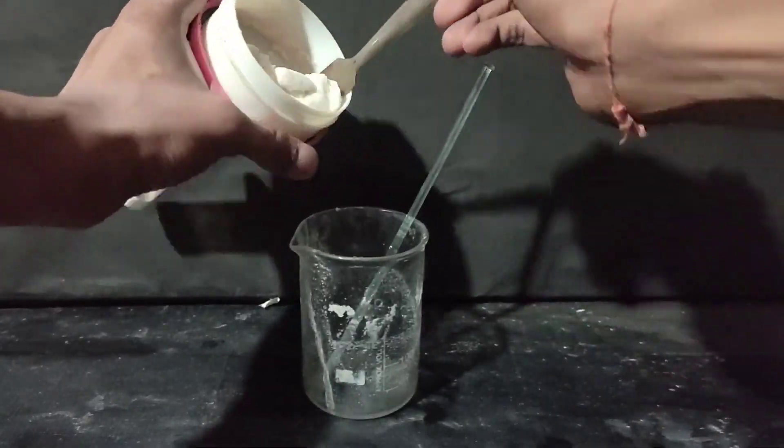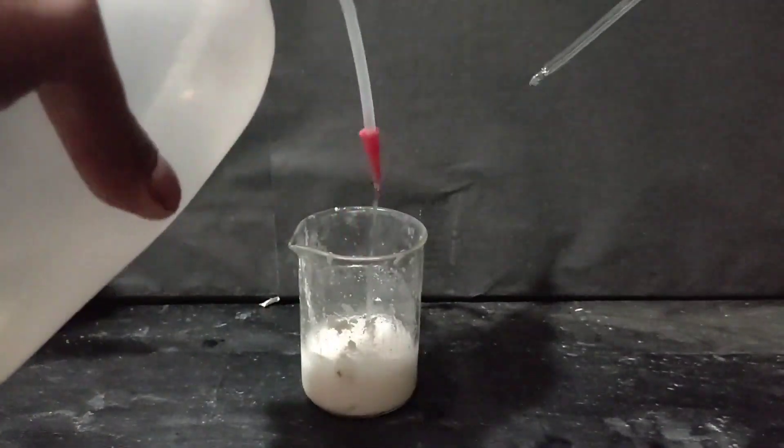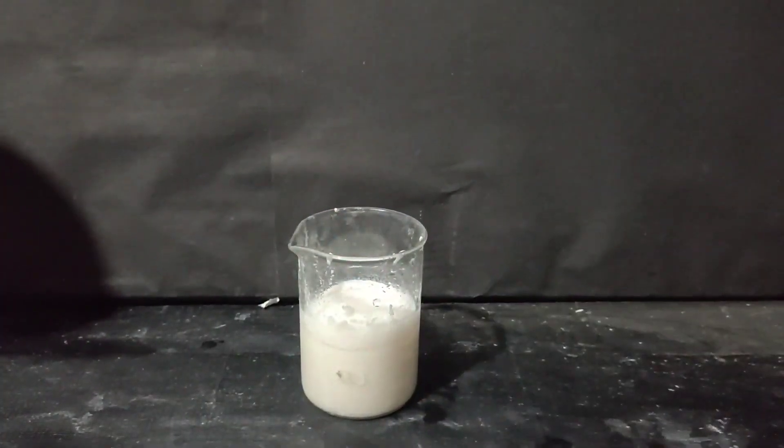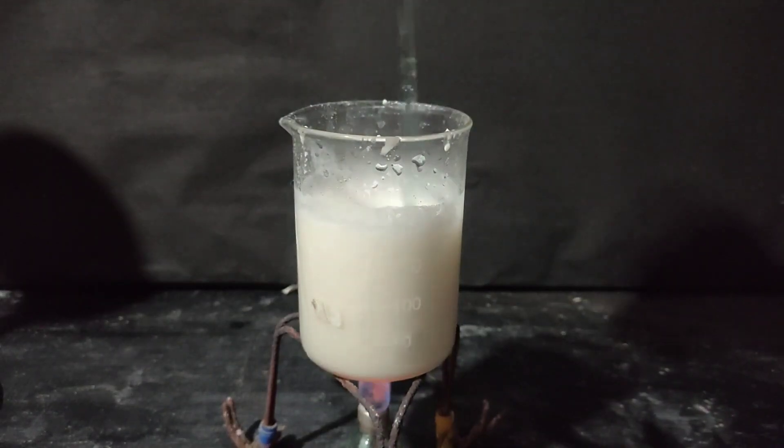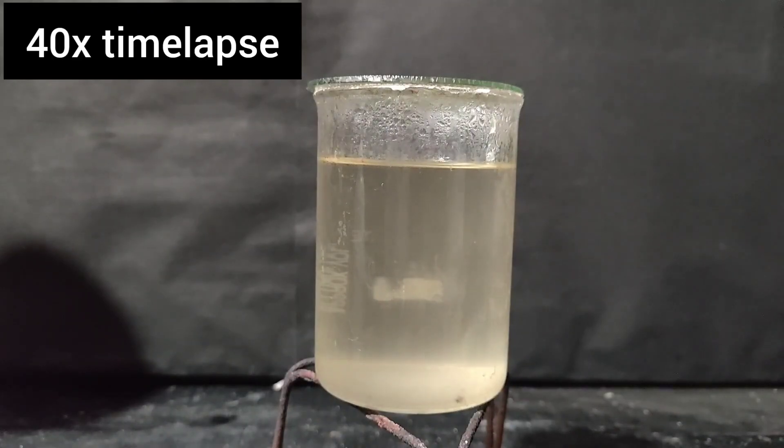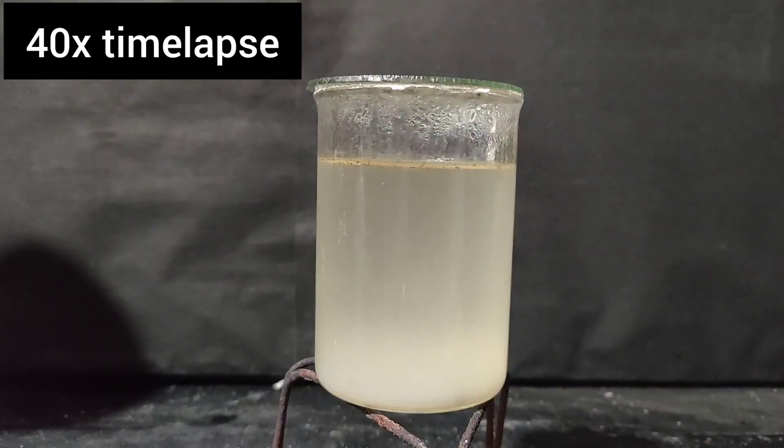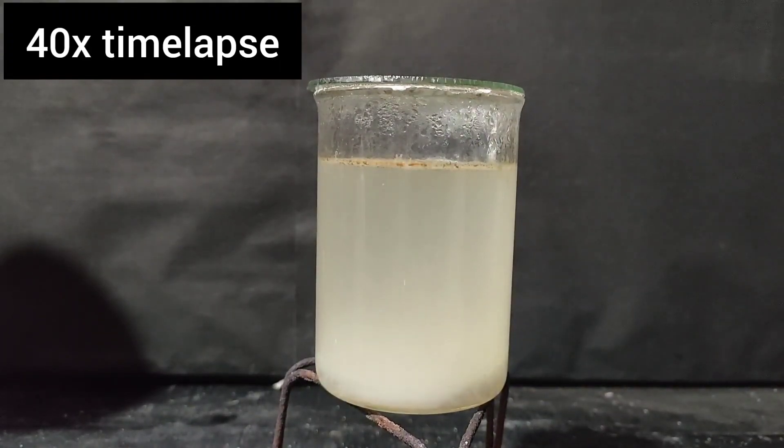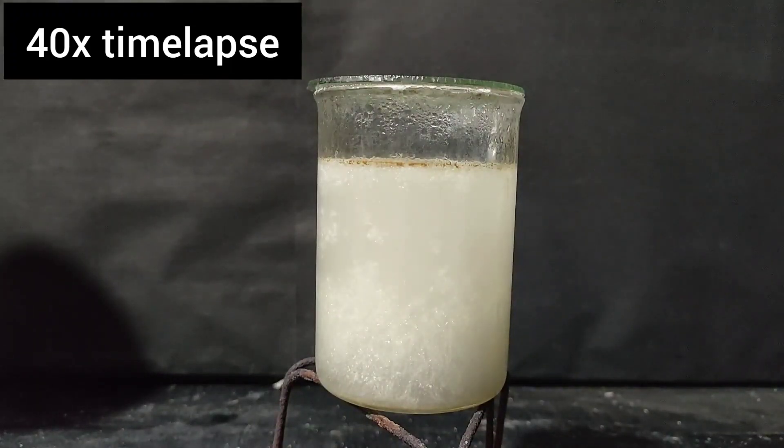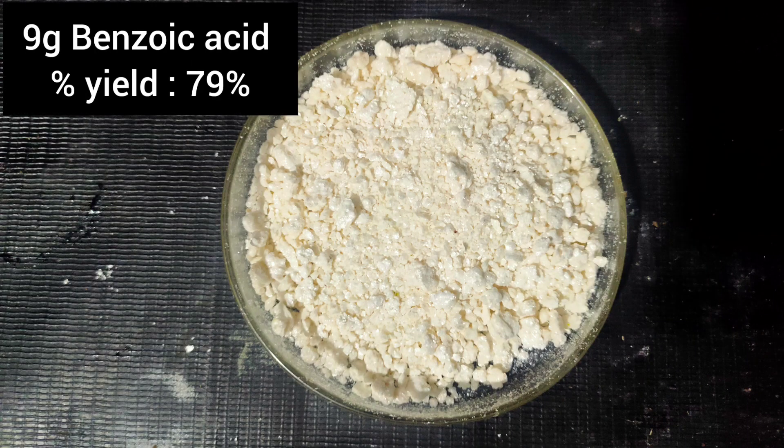Then the precipitate was transferred in a beaker and it was recrystallized from distilled water. Benzoic acid is soluble in hot water so I kept on adding water in small proportions to the boiling solution until everything dissolved and then let it cool at room temperature. As the solution cooled, benzoic acid crystallizes out. The crystals were filtered off using vacuum filtration and dried in a desiccator. The yield came to be 9 grams that corresponds to a percentage yield of 79%.